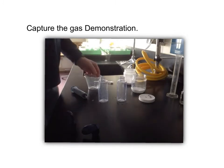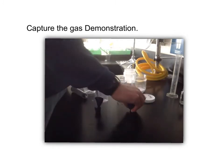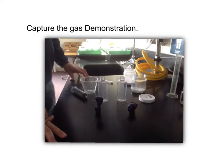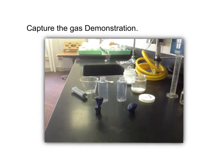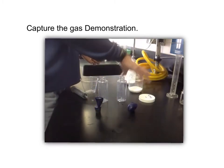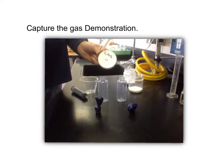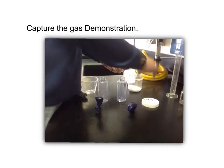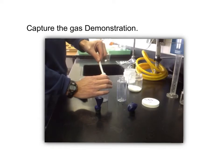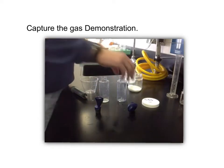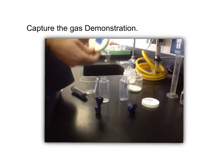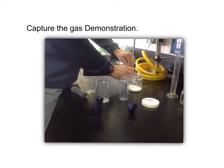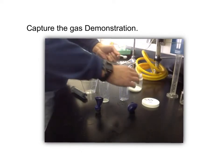This demonstration is called capture the gas. We're going to see if gas actually does take up space. Does gas actually have volume? So the first thing I'm going to do is I have some citric acid here, C6H8O7. I'm going to add a two milliliter spoonful of it to this container. And in this container, I'm going to add sodium bicarbonate, NaHCO3.